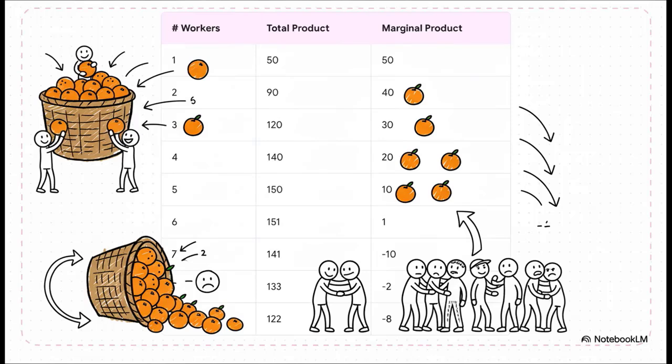With this new column, a really clear pattern just jumps out at us. The first worker adds 50 oranges. The second adds 40. The third adds 30. You can see the trend: 20, 10. And then the sixth worker adds just one single orange. But look at the seventh worker. Their contribution is negative 10. They're not just adding less. They're actively getting in the way, maybe knocking over baskets and making the entire team less productive. The total goes down.